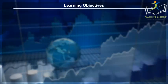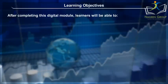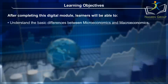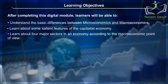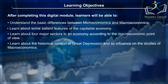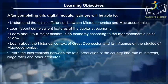Learning Objectives. After completing this digital module, learners will be able to: understand the basic differences between microeconomics and macroeconomics; learn about salient features of the capitalist economy; learn about four major sectors in an economy from the macroeconomic point of view; learn about the historical context of the Great Depression and its influence on macroeconomics; and learn the interrelations between total production, rate of interests, wage rates and other attributes.